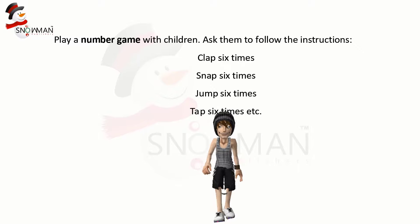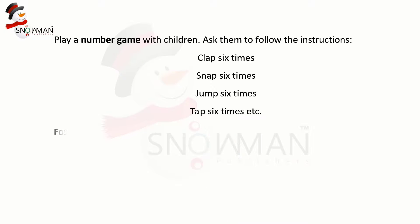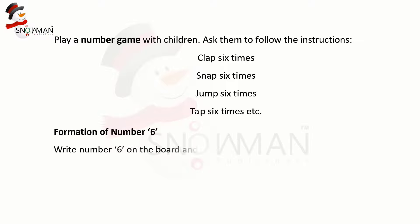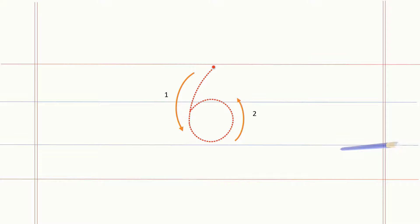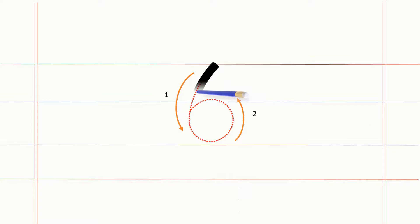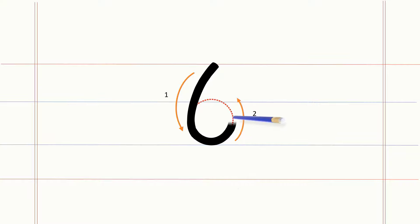Formation of number six. Write number six on the board and give instructions. Trace the number five times: start from the red point, draw a slanting line down, and curve around into a circle.